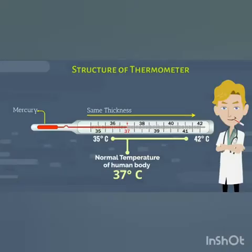This is the structure of a thermometer. On the left-hand side there is a bulb that contains mercury, and on the right side the scale is shown, whose range starts from 35 degrees Celsius to 42 degrees Celsius. The normal temperature of the human body is 37 degrees Celsius, shown on this scale with a red mark.